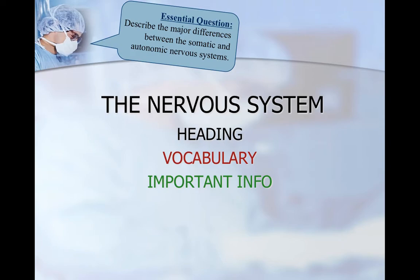Well hey everybody, how we doing? Today is the beginning of our first section of the nervous system. This is the introduction to the nervous system, and if you recall from the muscular system, the headings that you're going to see here are going to be in black, the vocabulary terms will be in red in all of these slides that we do in these videos, and important information such as details and things like that that you need to know are going to be in green.